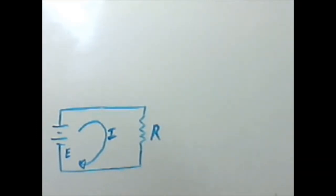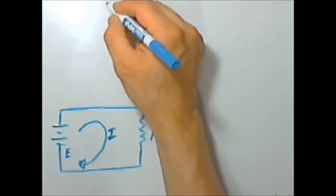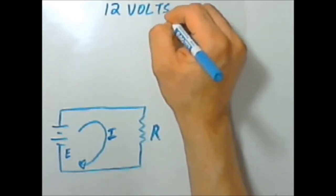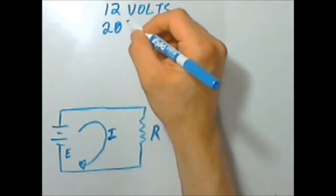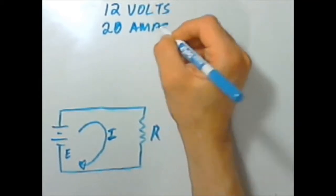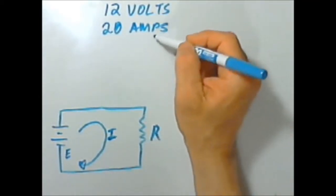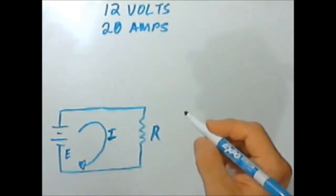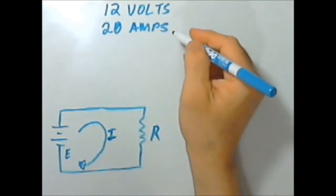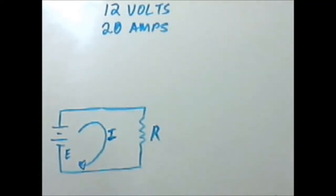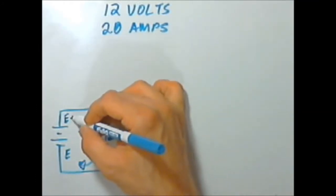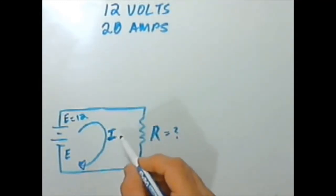First problem, a DC power supply is rated for 12 volts output and 20 amps. So at 12 volts output and our rated 20 amps load, what is the resistance of that load when it's pulling 20 amps? So our resistance we don't know, our E or our voltage equals 12, and our current is equal to 20.